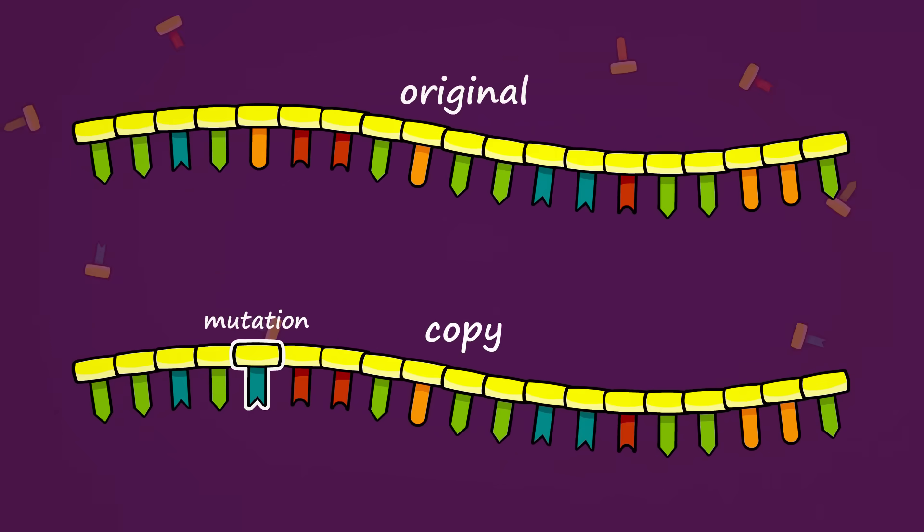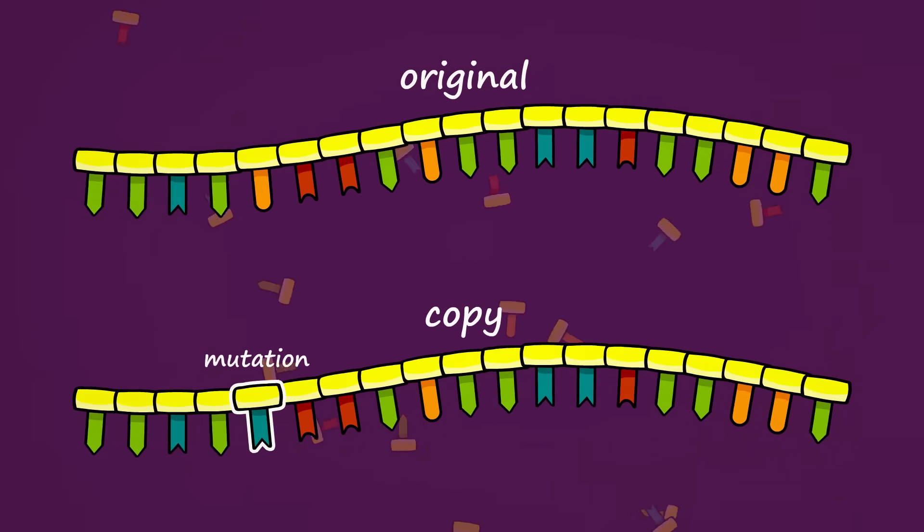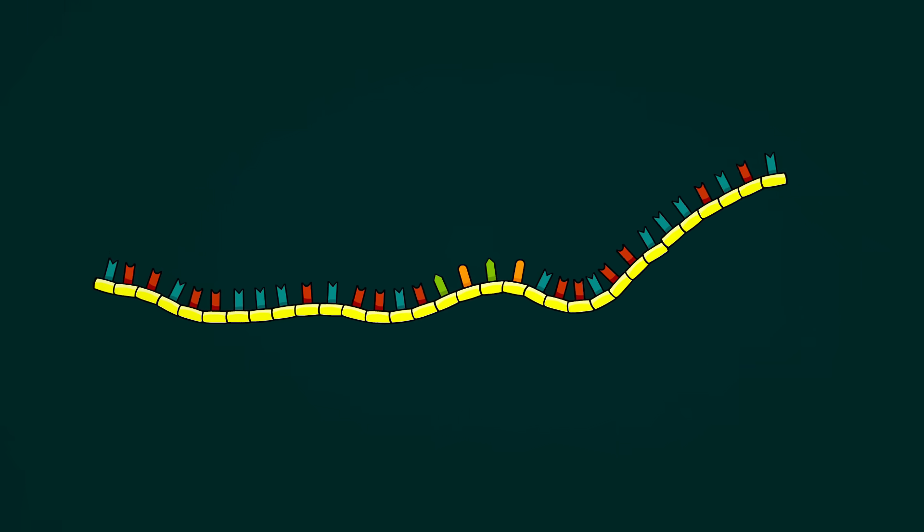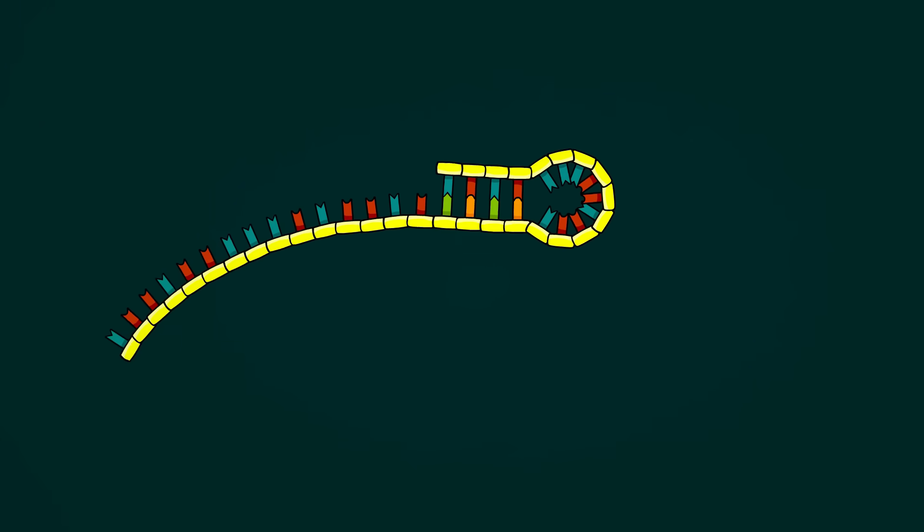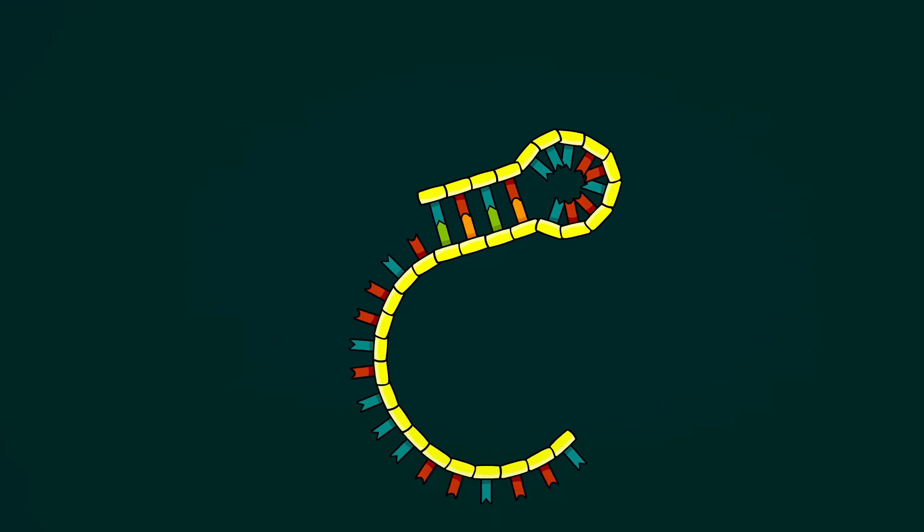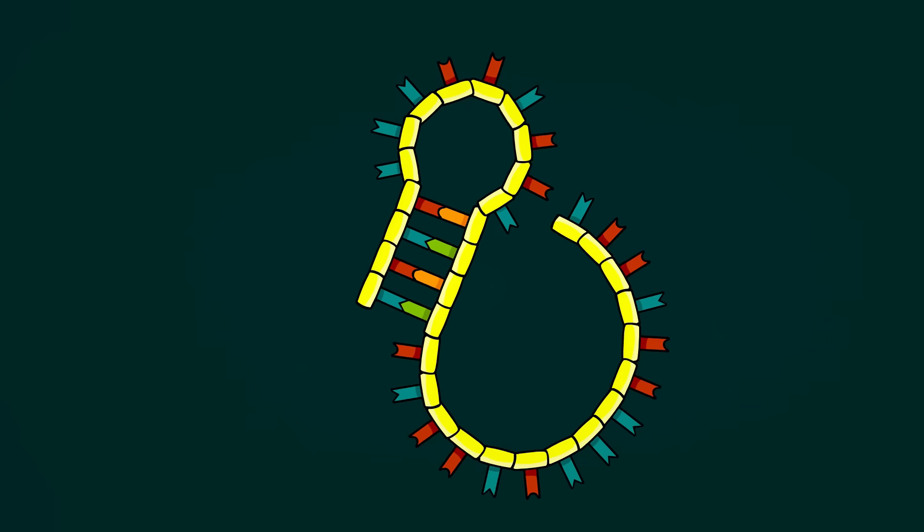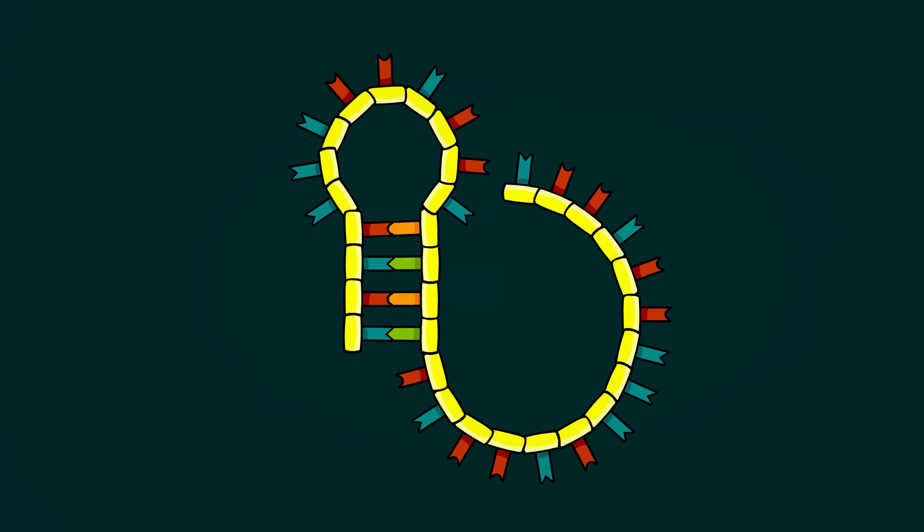As amazing as replication is, base pairing also gives RNA chains a second special ability. When placed in water cool enough for base pairing, but without enough free nucleotides for replication, chains will fold up and base pair with themselves.